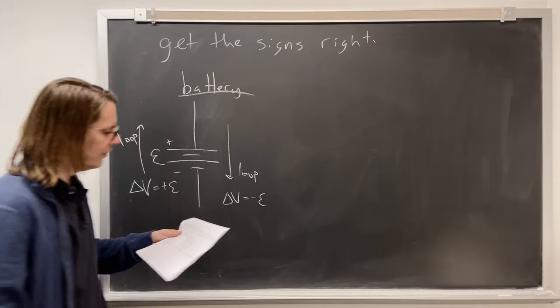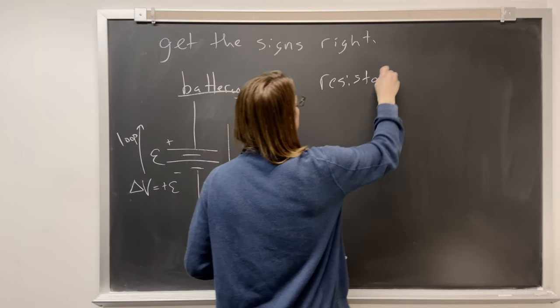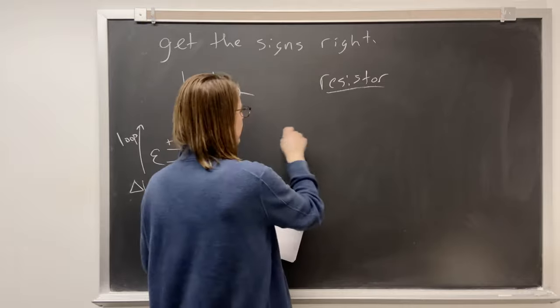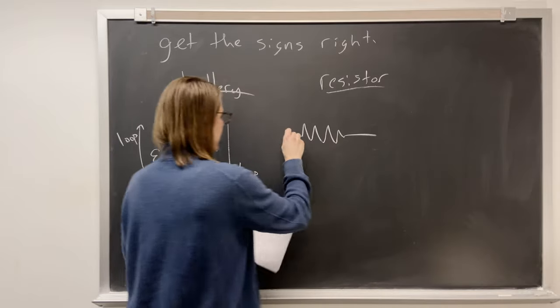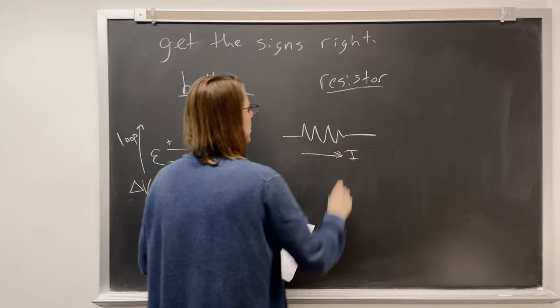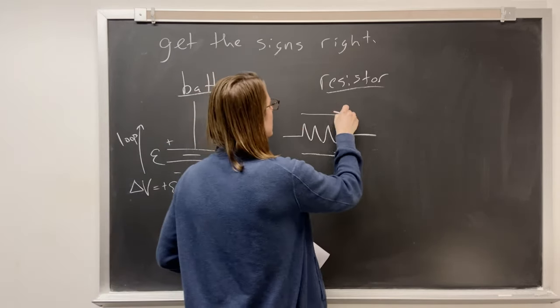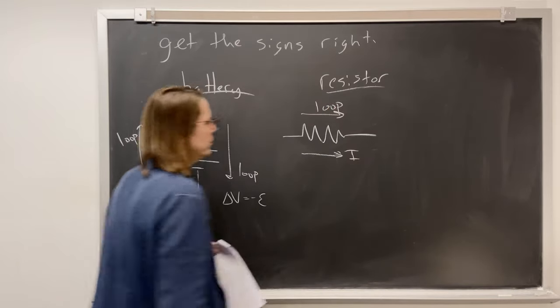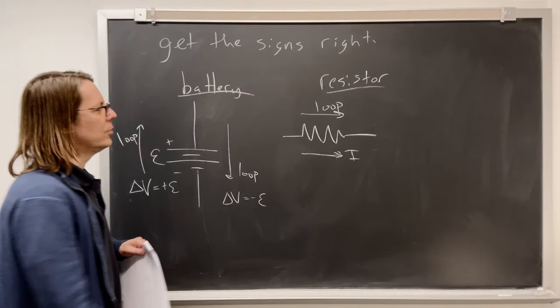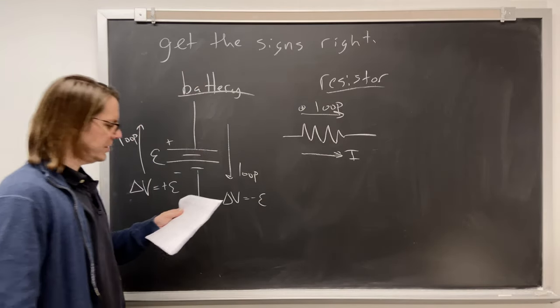Resistor will be a little bit more interesting. So let's look at the resistor. So say we have a resistor here, and we have current flowing this way through the resistor. Okay, now let's say we have the loop with the current. Say we're a little positive test charge, you're moving along, and we're asking how does the potential change?